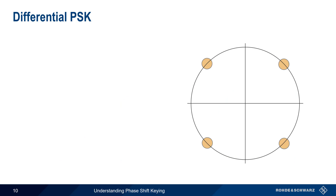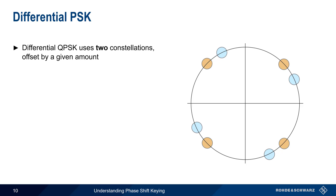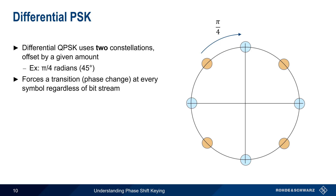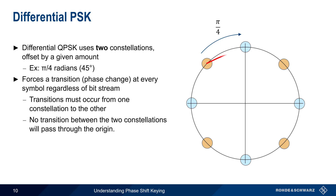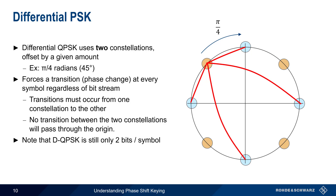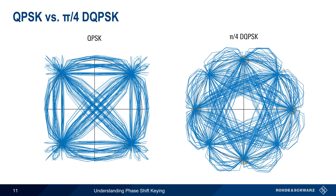The second method for avoiding the origin is differential PSK, or DPSK. In differential QPSK, we use two constellations, offset by a given amount — in this case, pi over 4 radians, or 45 degrees. DQPSK forces a phase transition at every symbol time, regardless of the bit stream, and transitions must occur from one constellation to another, here between the blue and the orange constellations. Because of these conditions, no transition between blue and orange states will ever pass through the origin. Another way of looking at this is to say that the maximum phase jump in DQPSK is 135 degrees. It's important to keep in mind that even though the DQPSK constellation would appear to have eight states, only four targets are possible at any given time, so the throughput or bitrate of DQPSK is the same as normal QPSK. Comparing actual constellation diagrams, we can clearly see how differential phase shift keying also avoids transitions through or near the origin.